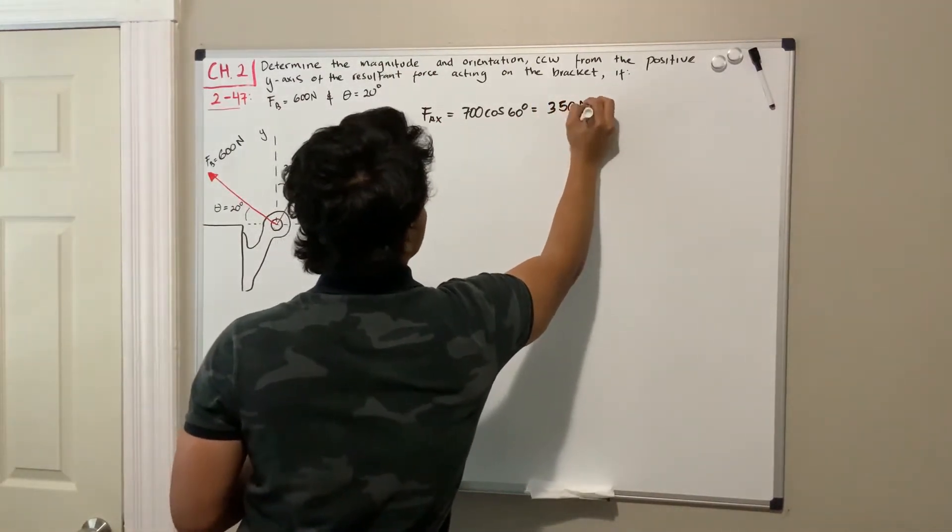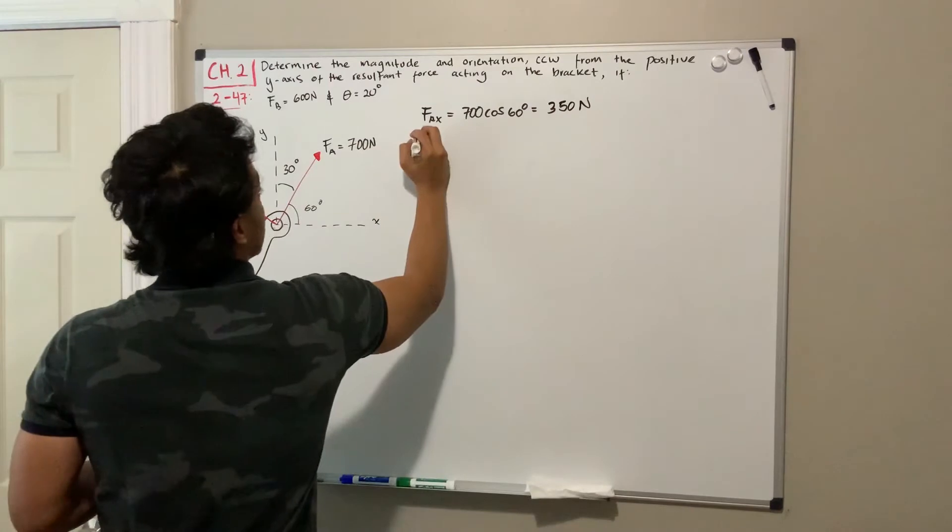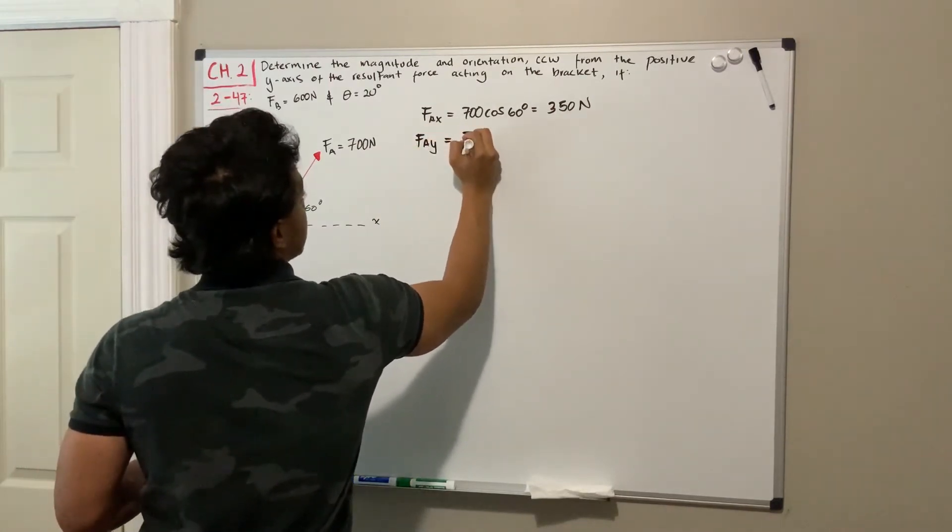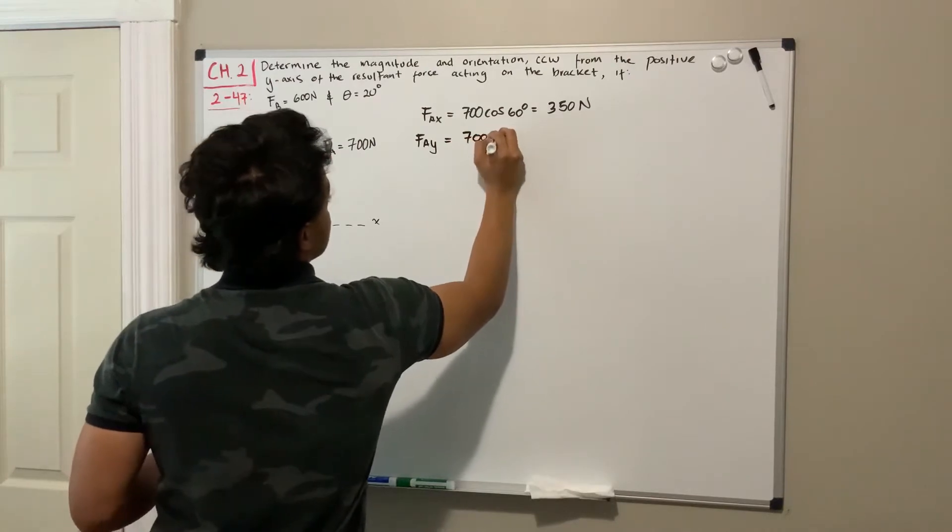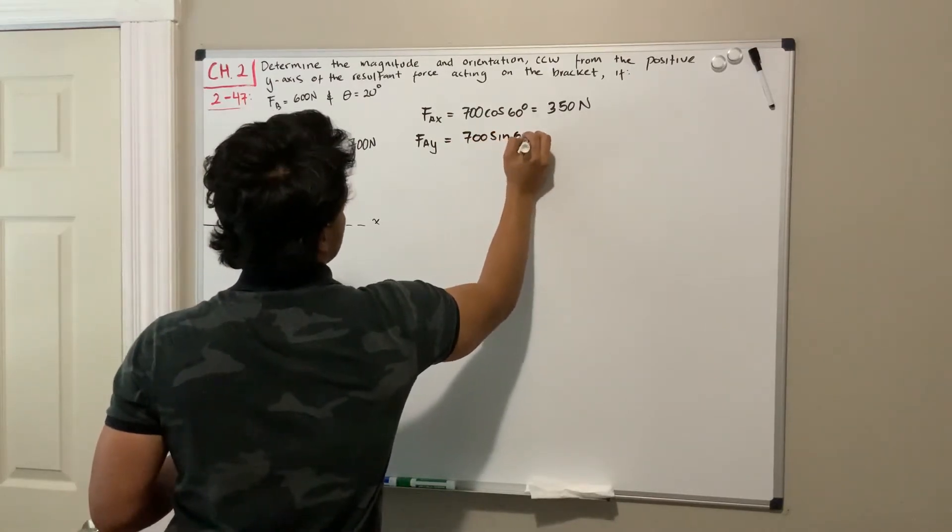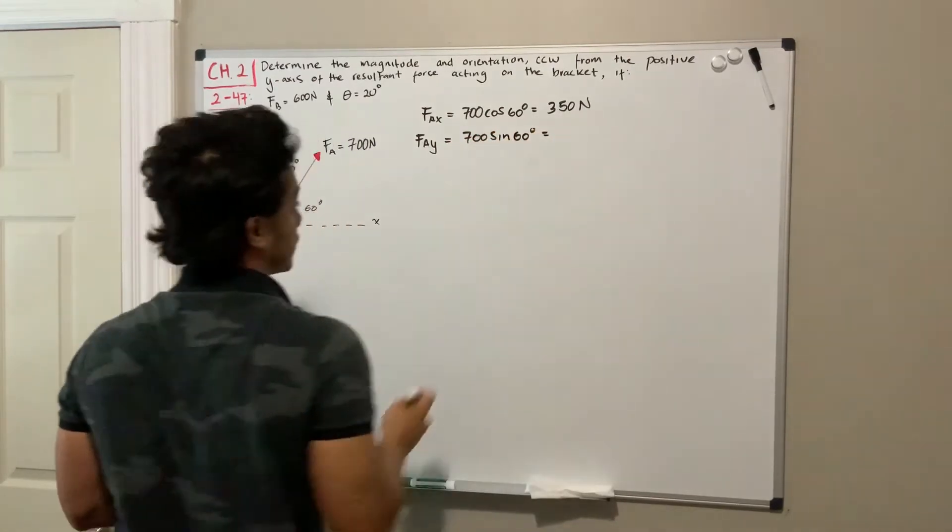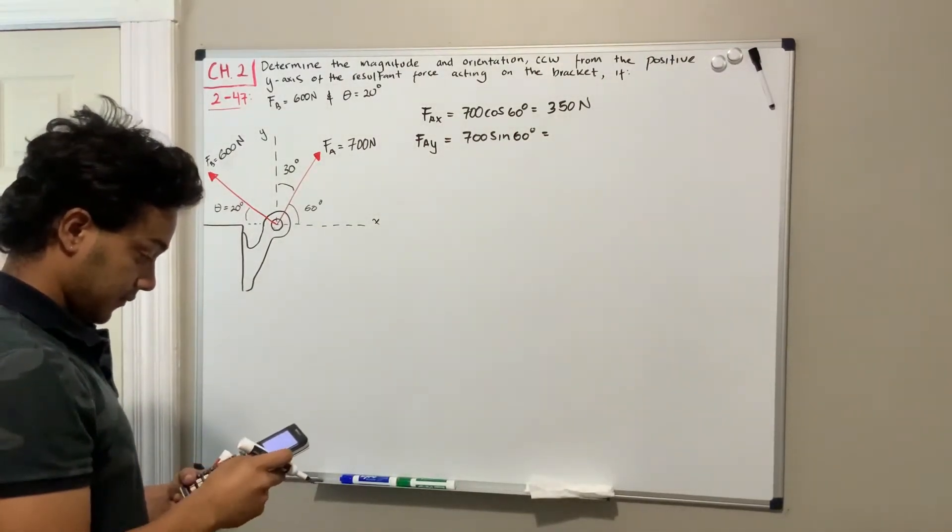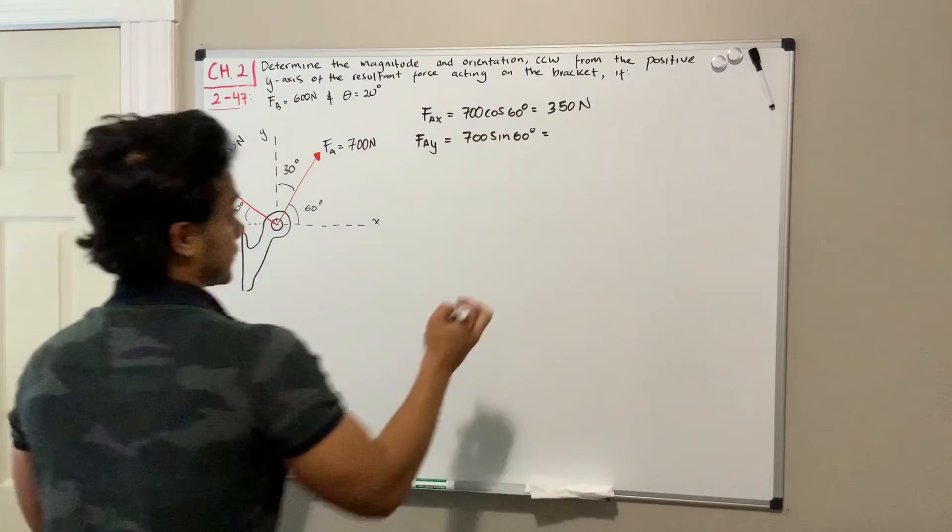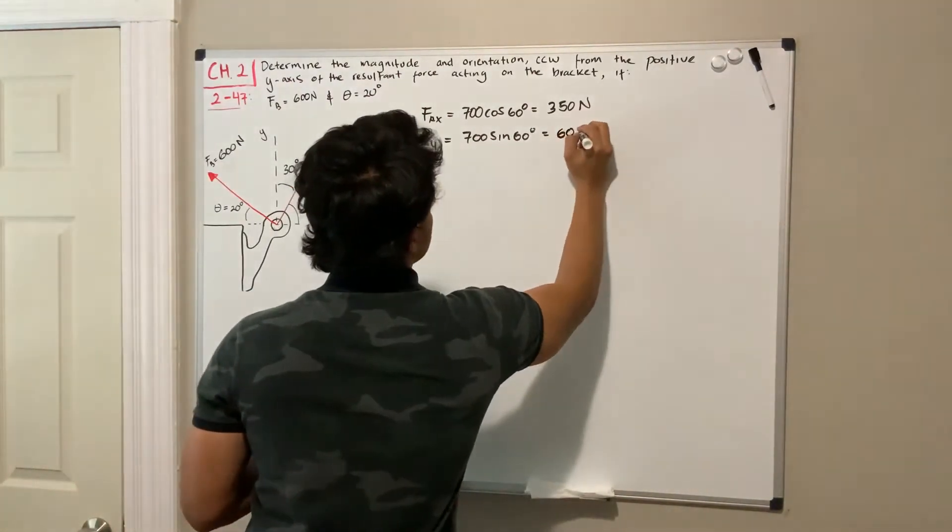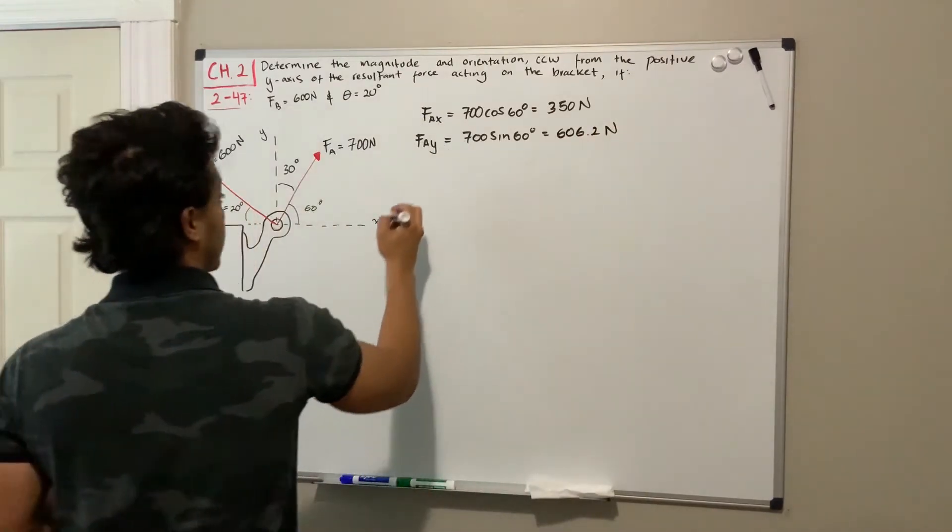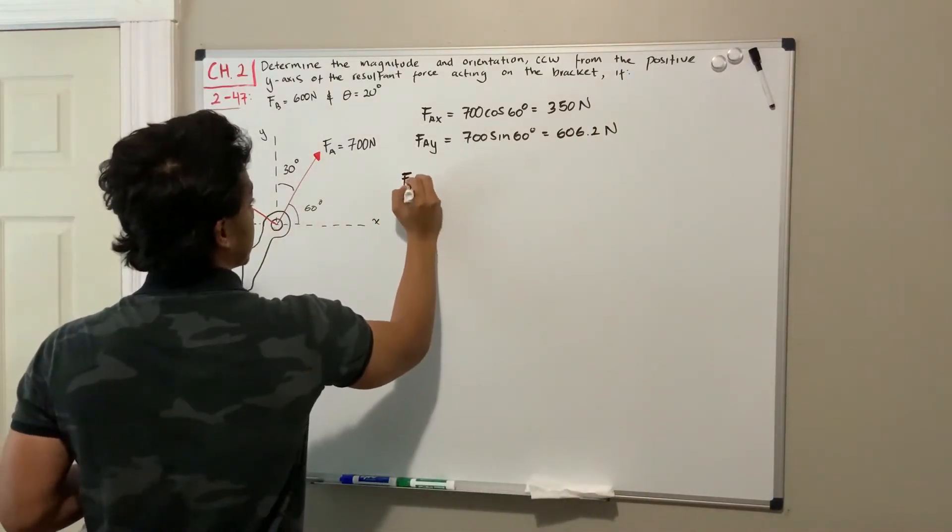Let's do F_a in the y-direction, so it's going to be 700 sine of 60 degrees, which is going to be equal to 606.2 newtons.